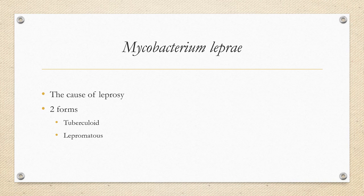Mycobacterium leprae is the cause of leprosy, also known as Hansen's disease. This disease targets the nerves, muscles, and skin. It's an acid-fast organism treated with drugs like rifampin or azithromycin. There are two forms: the tuberculoid form has limited disease with only a few bacteria in the skin and nerves, while the lepromatous form is characterized by widespread disease and many bacteria in the skin and nerves.